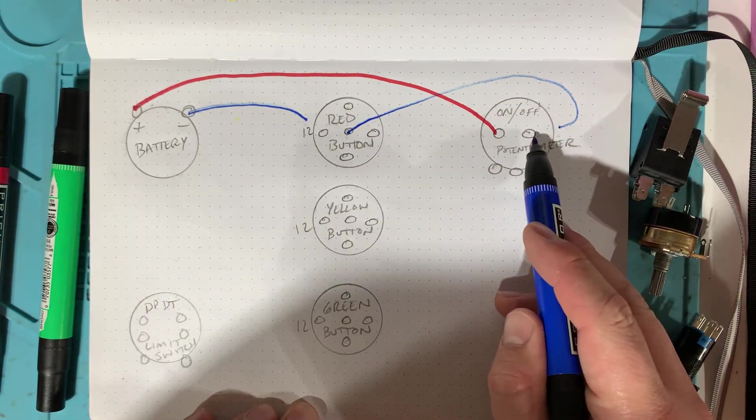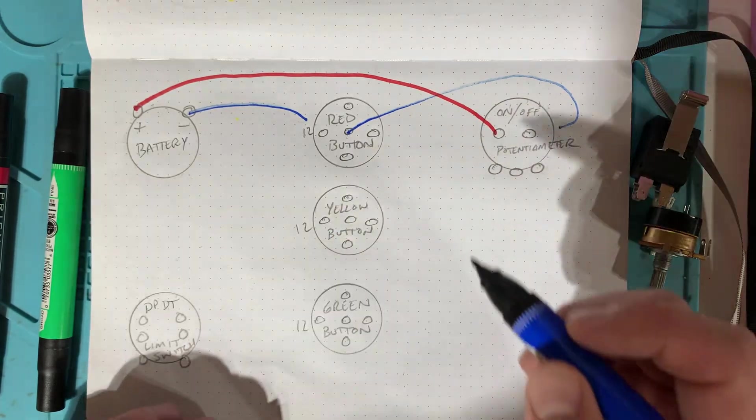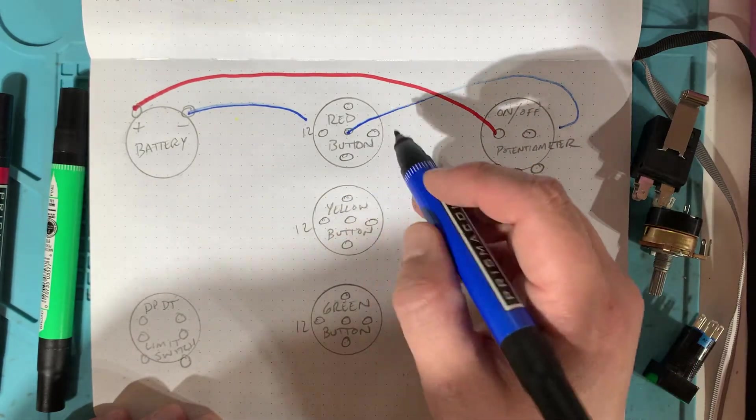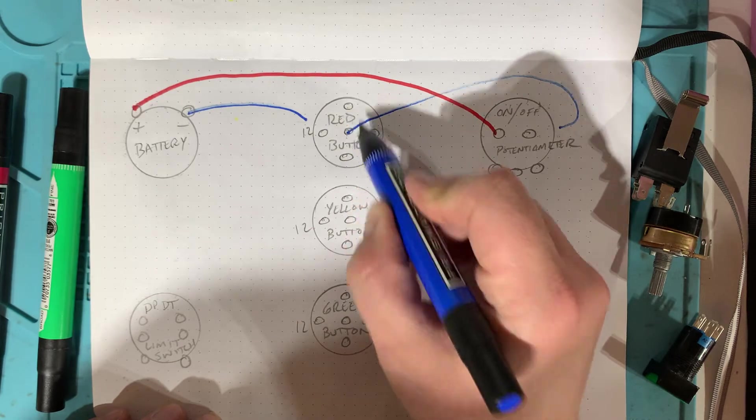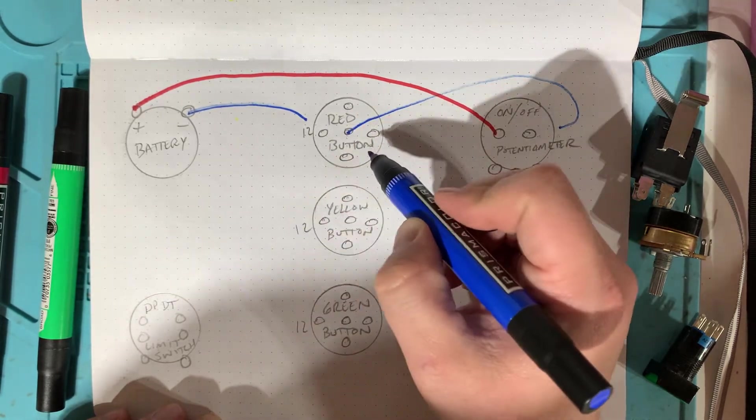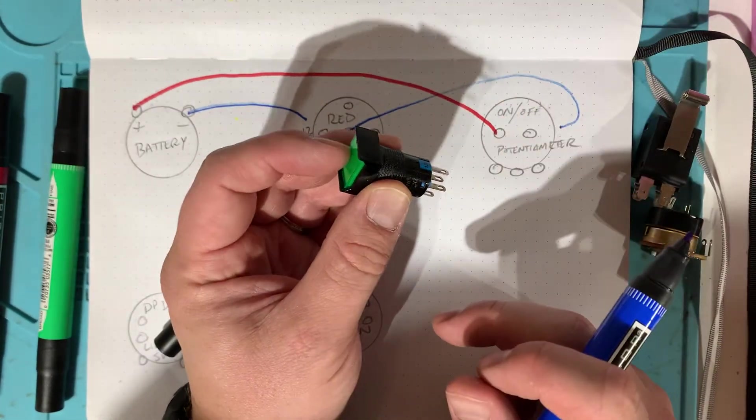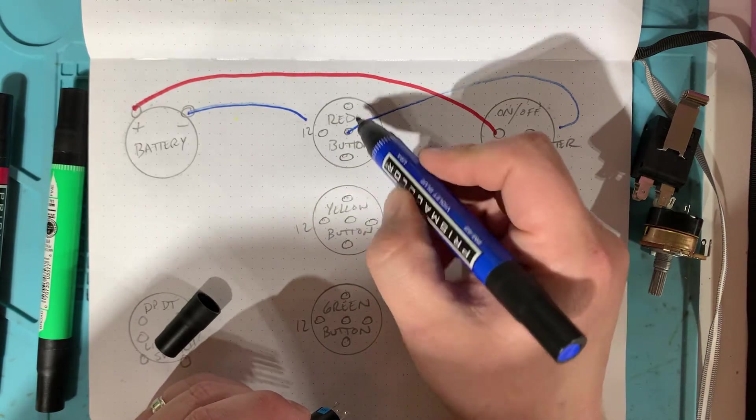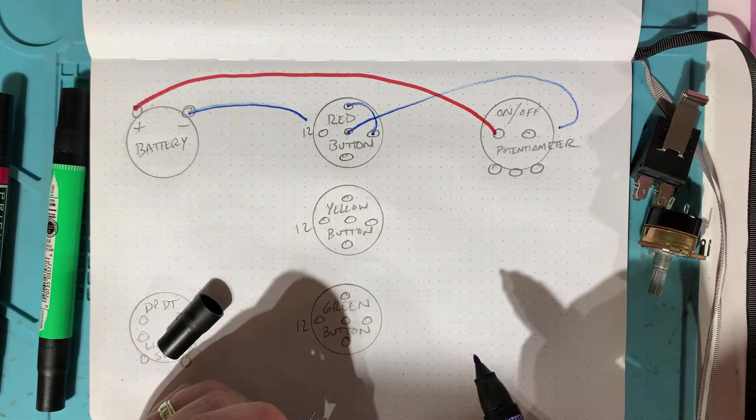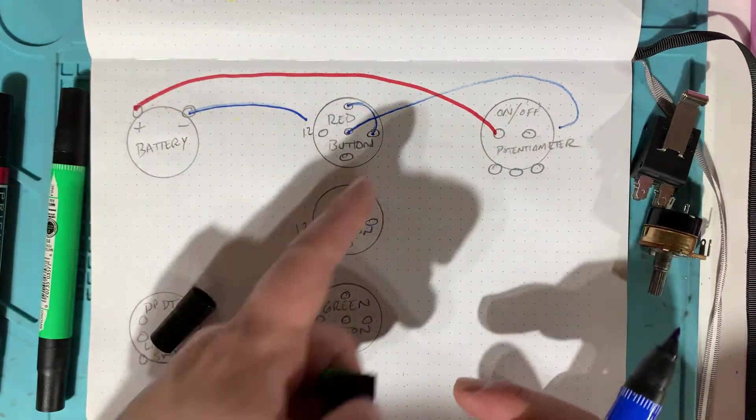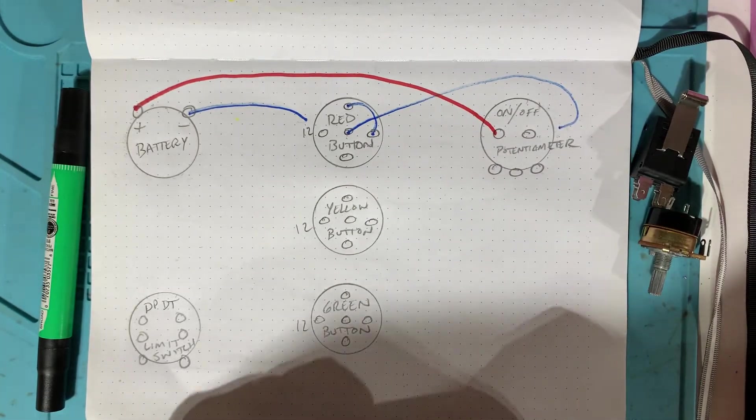So from the negative of the potentiometer, it goes to the center of the red. And then on the red button, if you connect the negative on the red to one of the sides, these indicate if it's gonna operate when it's up or down. So if we press the button in, the light turns on. That's what we want. On this configuration, if you connect these two with a jumper, now the red light will work. You push the red light in, it'll turn on when pressed.